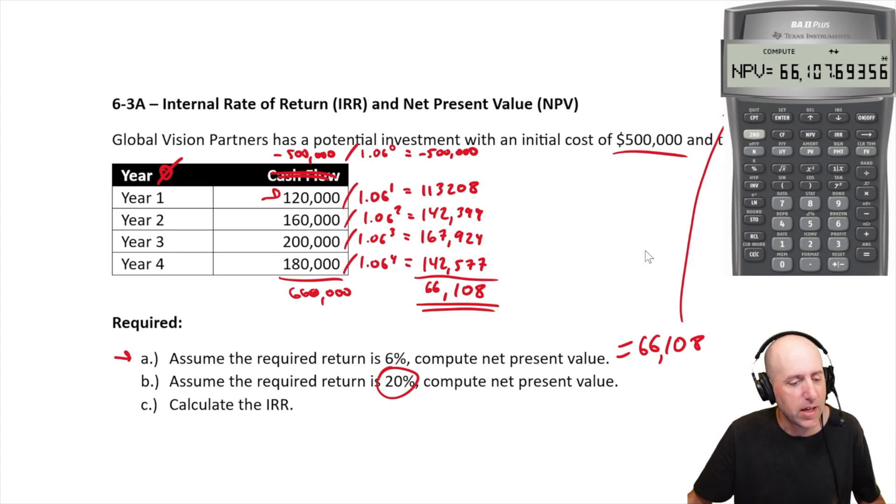So, now we can play around. We've got all the cash flows already inputted into our calculator. I can solve part B in one second, right? All I do is I hit NPV again. It says, well, what's the discount rate? It was 6. Let's make it 20. I hit enter. I hit the down arrow. I hit, now this is the old answer. I have to hit compute again. I hit compute. And you can see it's negative 86343. So, okay, we've solved, right? We've computed the net present value at 6%. We've computed the net present value at 20% discount rates.